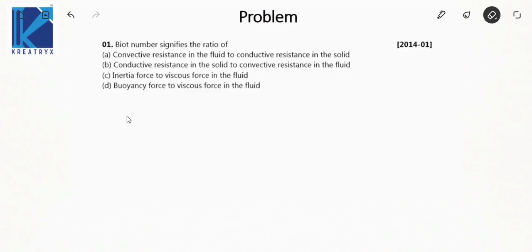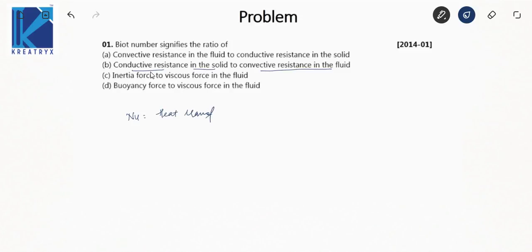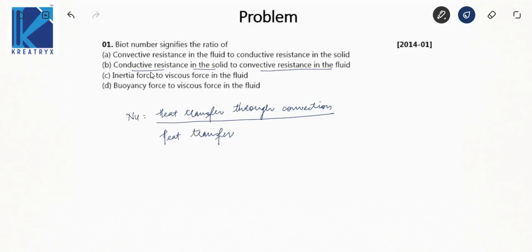Biot number is basically the ratio of conductive resistance in the solid to convective resistance in the fluid, whereas Nusselt number is heat transfer through convection upon heat transfer through conduction. This is the key difference between the physical significance of Biot number and Nusselt number. Biot number is h·Lc/ks, whereas Nusselt number is h·Lc/kf.